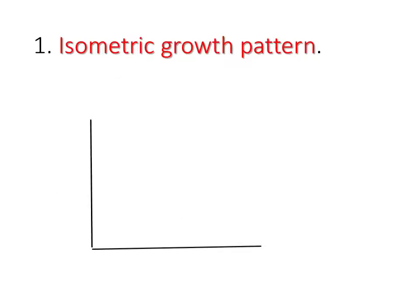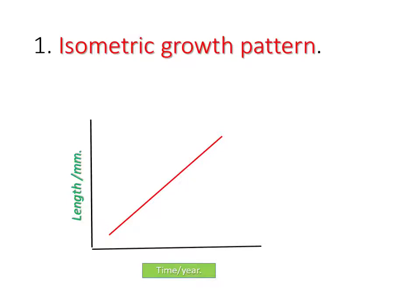We can use a graph to illustrate the isometric growth pattern. We employ the graph of length in millimeters against time in years. The graph shows that all organs follow the same rate as the body, which is why there is no change in the shape of the organism as it grows.